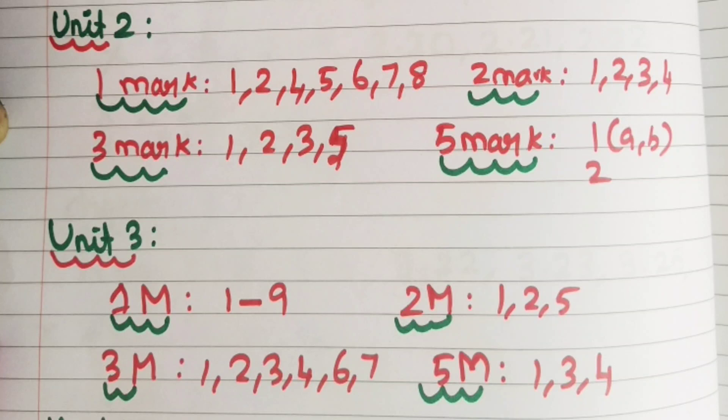Unit 3: 1 mark — 1. 2 mark — 1. Short answer — 1, 2, 5. Short answer — 1, 2, 3, 4, 6, 7. 5 mark — 1. 3 mark — 1, 3, 4.